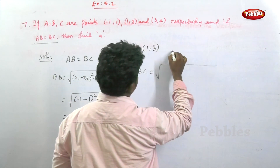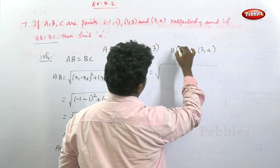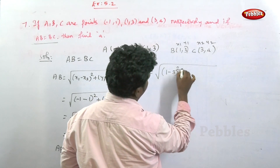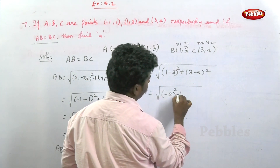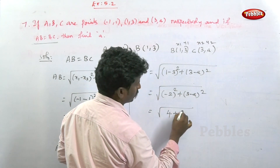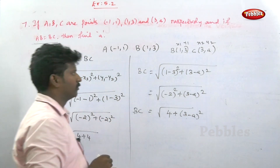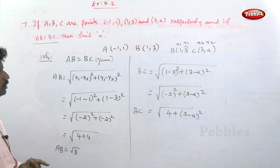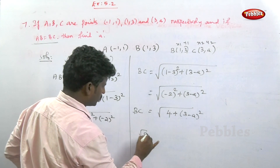Now for BC: point B is (1, 3) and point C is (3, a). So this is x1, y1, x2, y2. BC equals root of (1 minus 3) whole square plus (3 minus a) whole square = root of (4 plus (3 minus a) squared). The given statement is AB equals BC, so root 8 equals root of (4 plus (3 minus a) squared).